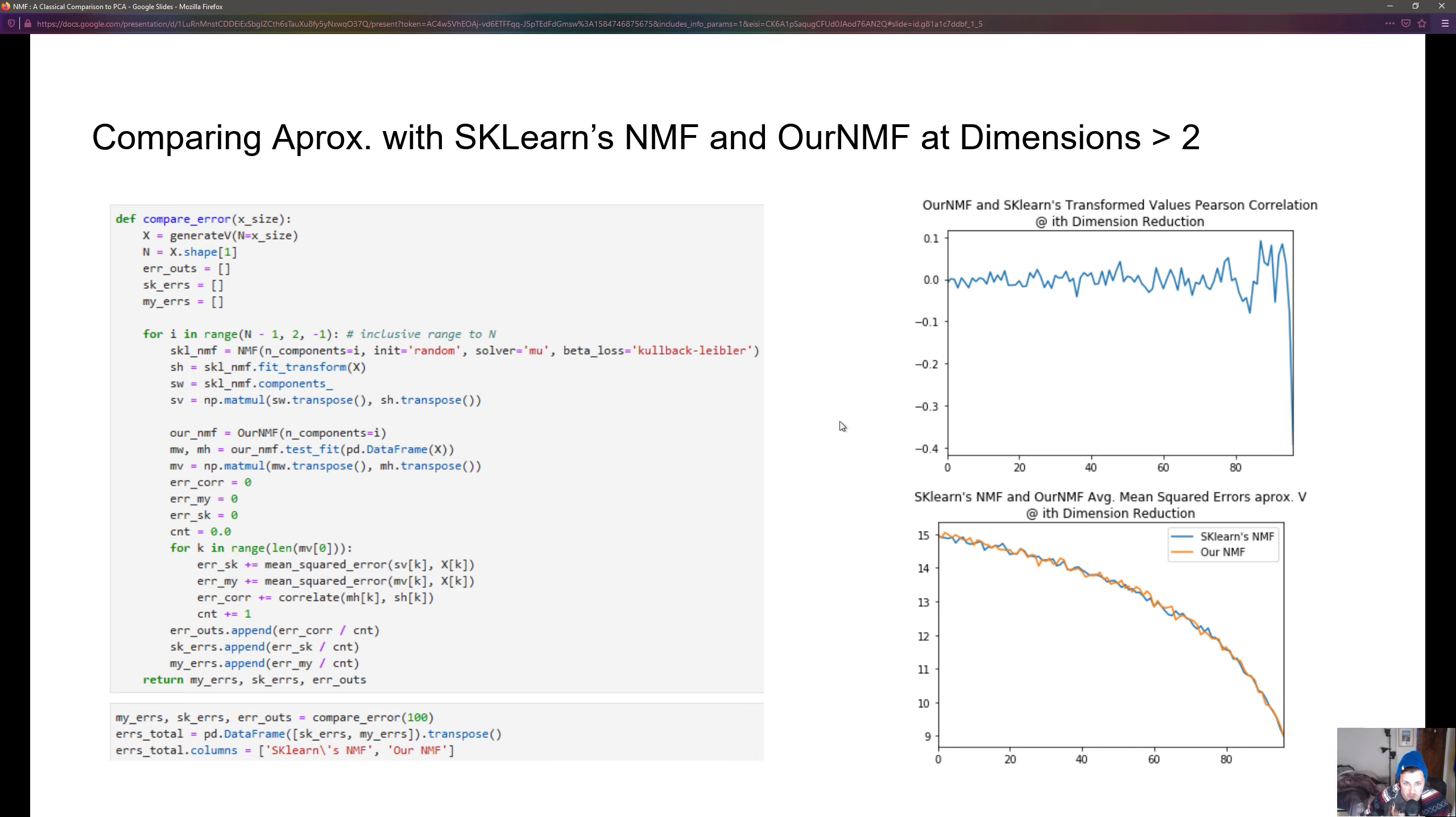This function is comparing scikit-learn's ability to approximate the original input matrix and our NMF's implementation of approximating the original input matrix, and it's using a mean squared error function from scikit-learn to compare how far off we were approximating the original input V.